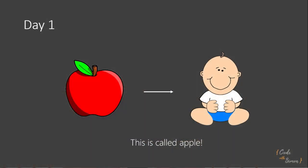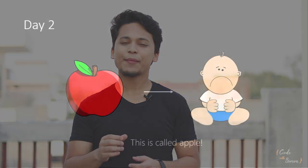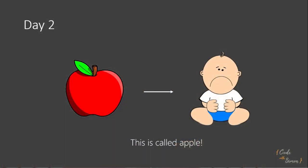His father decides that he will teach him what is an apple and how it looks like. So on day one, the father reaches to the three year old kid, shows him an apple and says, this is called apple. The kid's expression changes — he's like, why am I showing this apple? The father stops there. He again comes on day two and shows him an apple and would again say that this is called an apple.